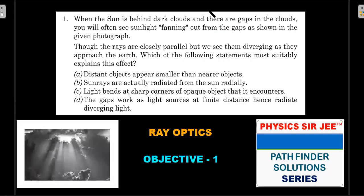The first question: when the sun is behind dark clouds and there are gaps in the clouds, you often see sunlight fanning out from the gaps. The rays appear to be diverging as they approach the earth, though they are actually closely parallel. Which of the following statements most suitably explains this effect? Options include: distant objects appear smaller than near ones; sun rays are actually radiated radially; light bends at sharp corners of opaque objects; or the gaps work as light sources at finite distance and radiate diverging light.